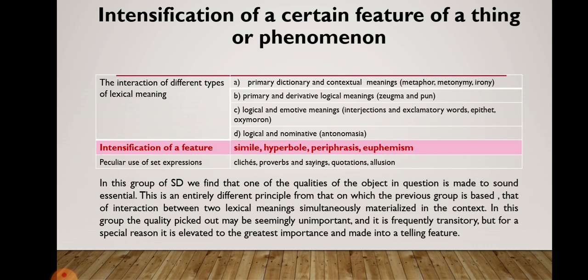This is an entirely different principle from that of the previous group, which is based on the interaction between two lexical meanings simultaneously materialized in the context. In this group, the quality picked out may be seemingly unimportant and frequently transitory, but for a special reason it is elevated to the greatest importance and made into a telling feature. Within this group we will consider such stylistic devices as simile, hyperbole, periphrasis, and euphemism.